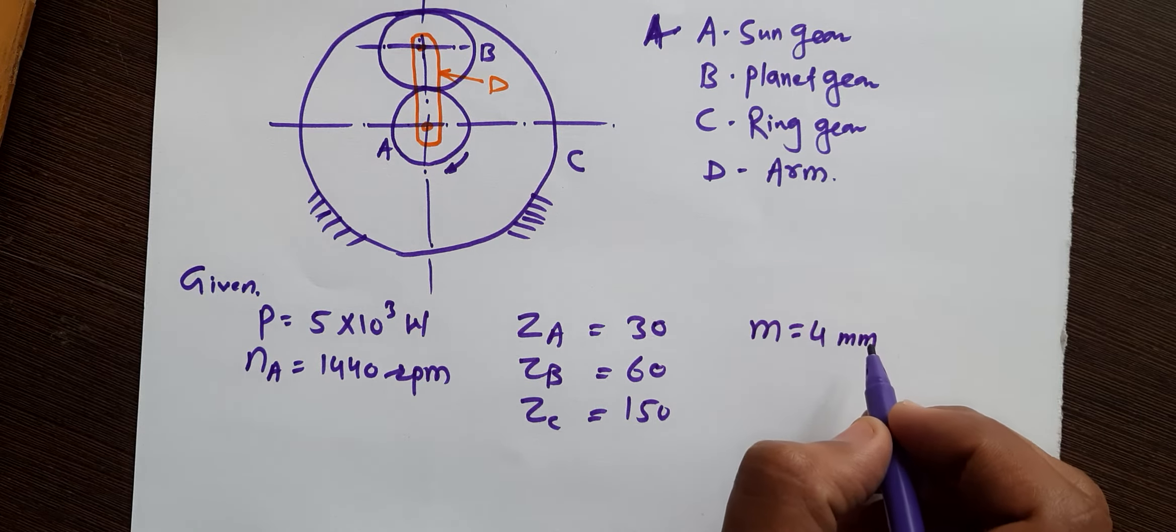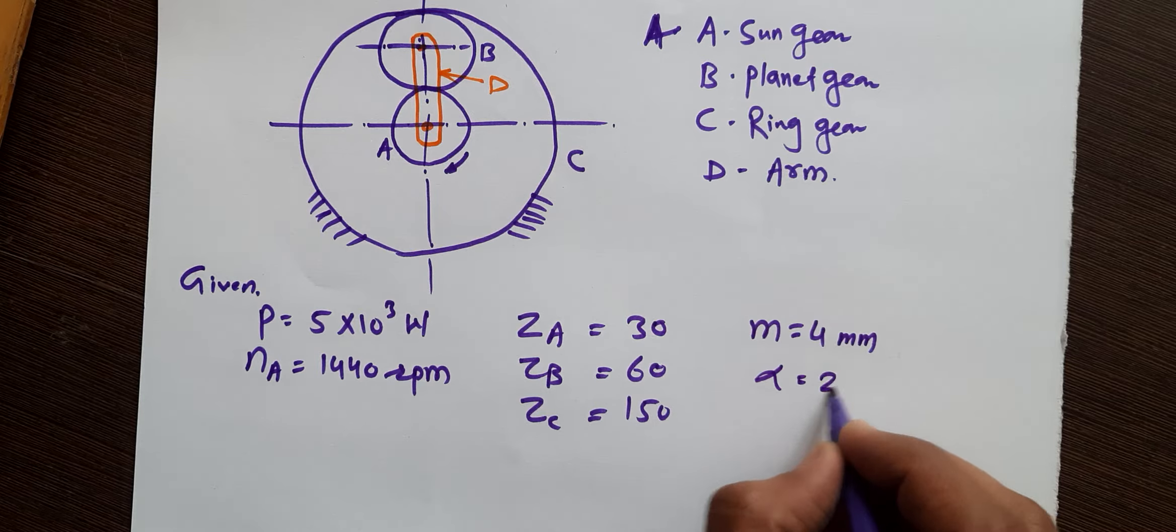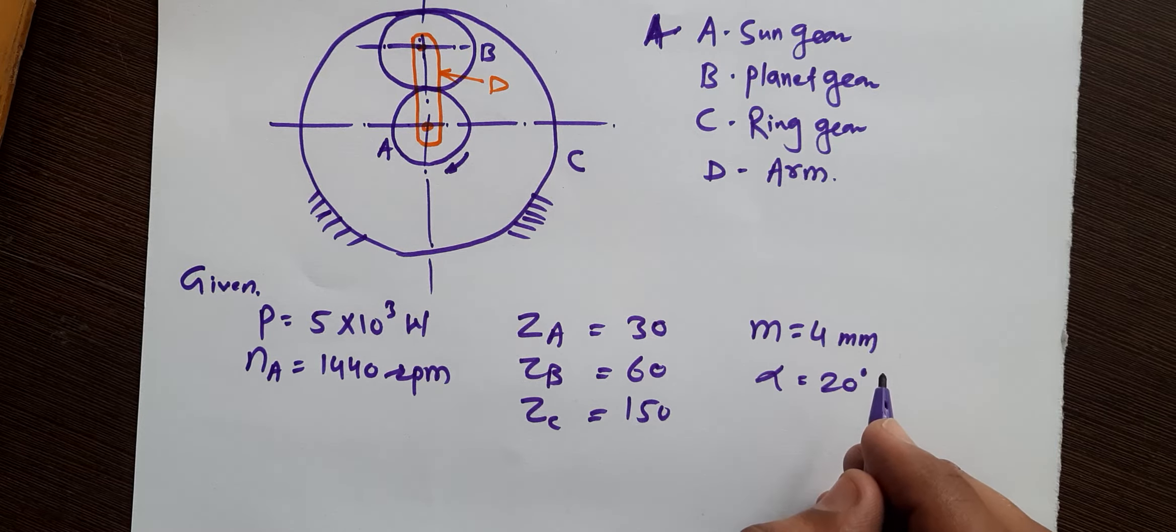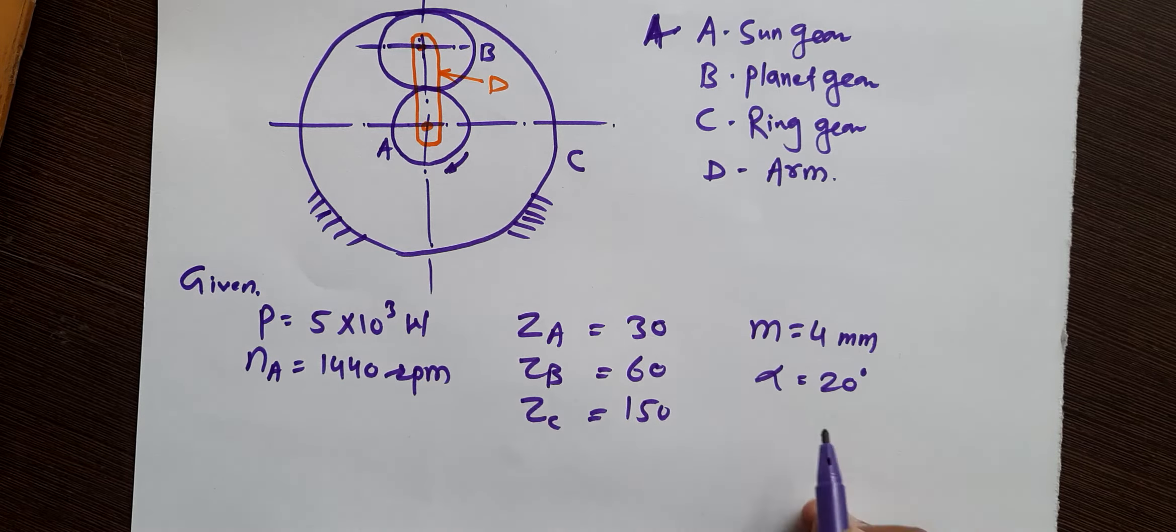The pressure angle is 20 degrees. Pressure angle alpha is 20 degrees. Draw the free body diagram of the forces and calculate the torque transmitted by arm D.